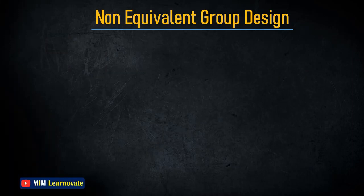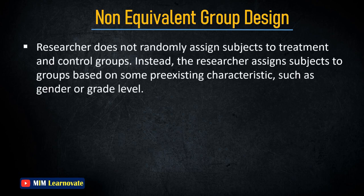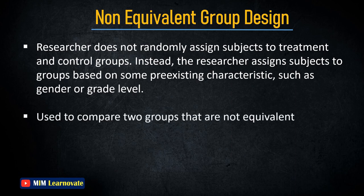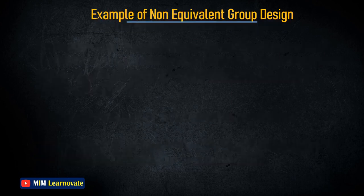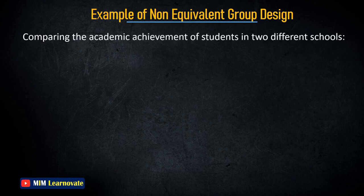Non-Equivalent Group Design: The Non-Equivalent Group Design is the most popular type of quasi-experimental design. The researcher does not randomly assign subjects to treatment and control groups; instead, subjects are assigned based on pre-existing characteristics such as gender or grade level. This design is often used in educational research to compare the effectiveness of different instructional methods or treatments, such as comparing academic achievement of students in two different schools.